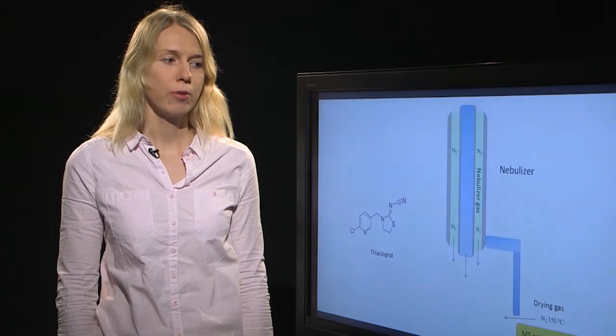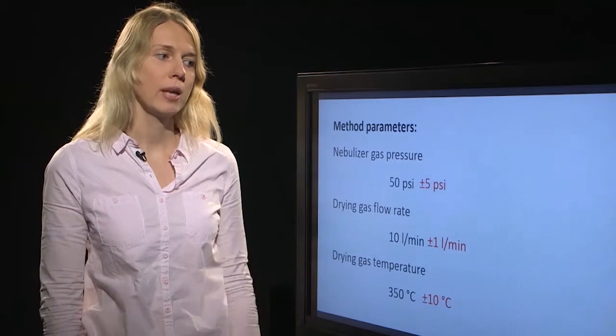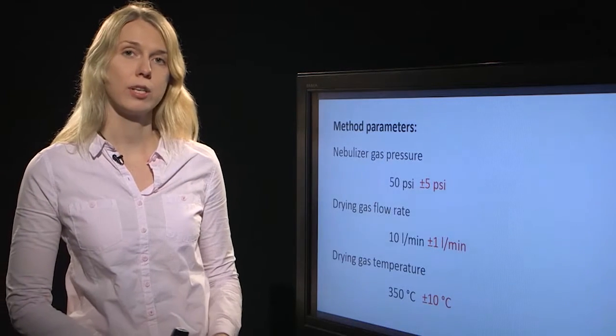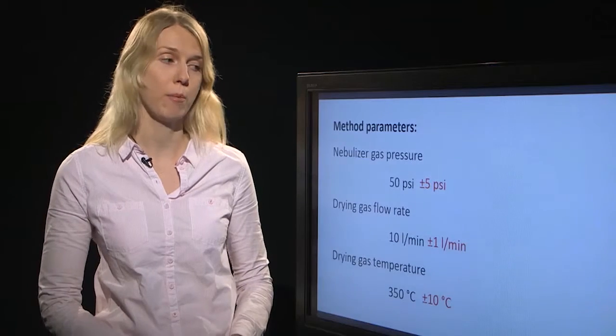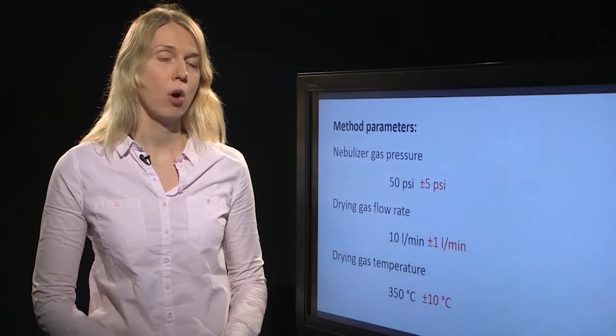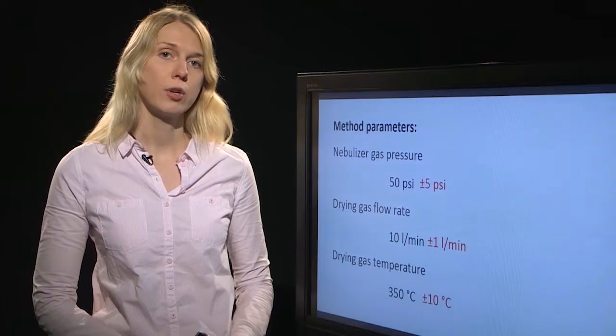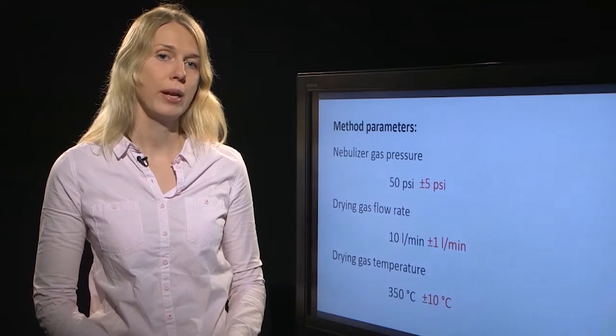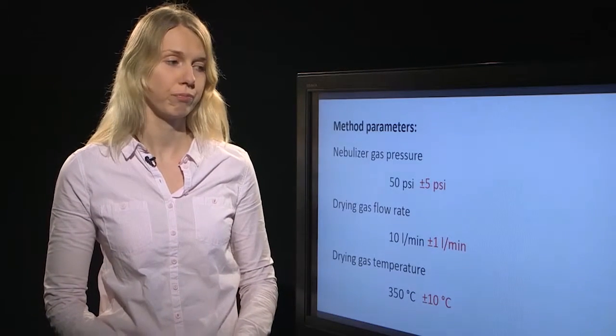During the development of the method, ionization source parameters have been optimized and the optimal values for nebulizer gas pressure, drying gas flow rate, and drying gas temperature have been found to be 50 psi, 10 liters per minute, and 350 degrees. And now before we can start evaluating the robustness, we need to figure out how much these parameters may change during experiments. We have decided according to our previous knowledge that nebulizer gas pressure may change by 5 psi, the drying gas flow rate by 1 liter per minute, and the drying gas temperature by 10 degrees.